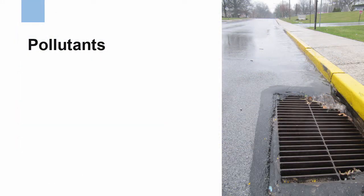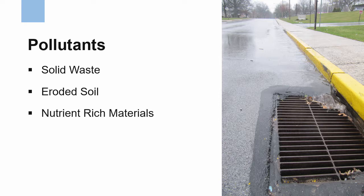There are many stormwater pollutants, but here we'll group them into five broad categories: solid waste or trash; eroded soil or sediment; nutrient-rich materials, which are mostly fertilizers; pathogens, which are bacteria and viruses; and toxic materials. Let's take a look at each of these.